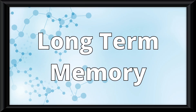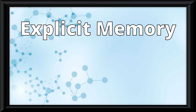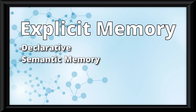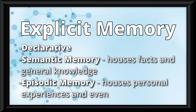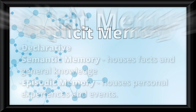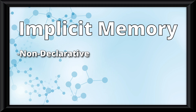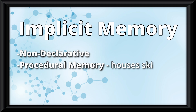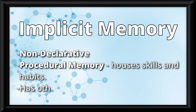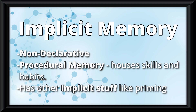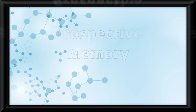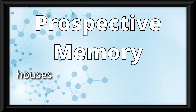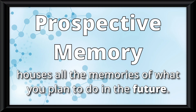Let's talk about the different types of memories stored here. Explicit memory is known as declarative. It houses the semantic memory, which houses facts and general knowledge, and the episodic memory, which houses personal experiences and events. Implicit memory is known as non-declarative. It has in it the procedural memory, which houses skills and habits, and it also has other implicit stuff like priming. Finally, even though it isn't one of the two major types of long-term memory, prospective memory houses all the memories of what you plan to do in the future.